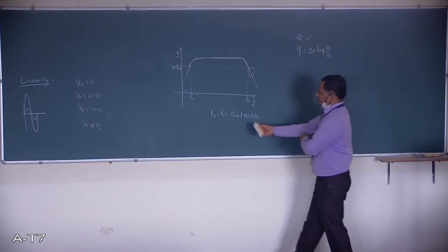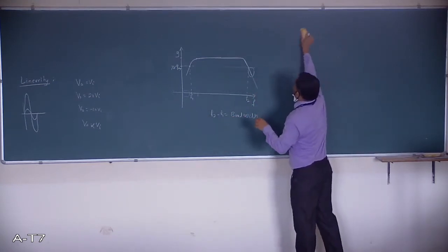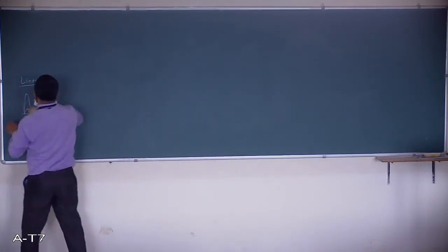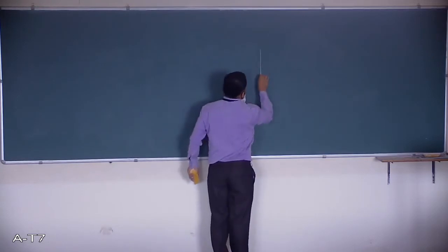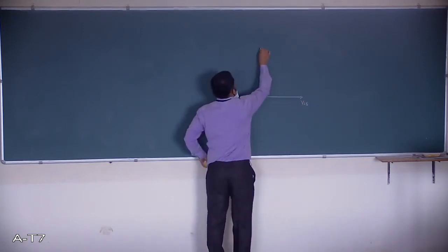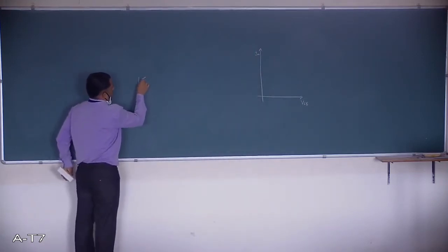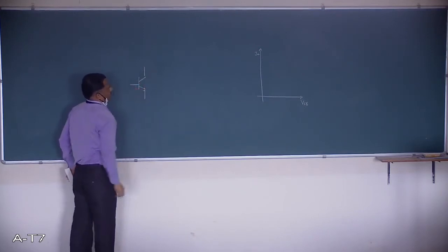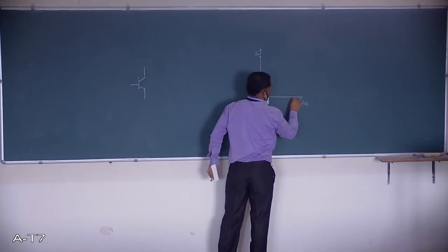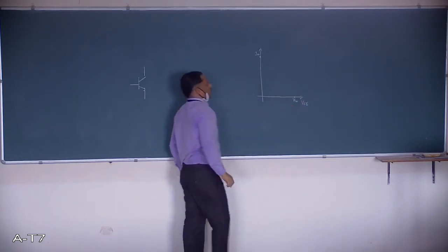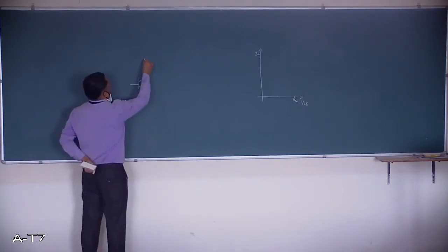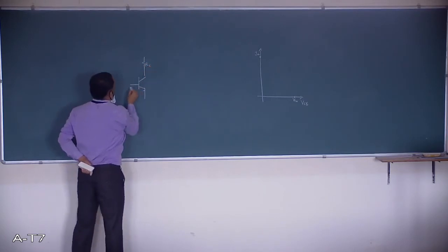Now we discuss the transistor used as a switch. Referring to the output characteristics — VCE vs IC — we can have either maximum current with zero voltage (saturation), or maximum voltage with zero current (cutoff). Let's see a circuit that demonstrates transistor switching.